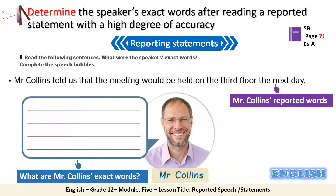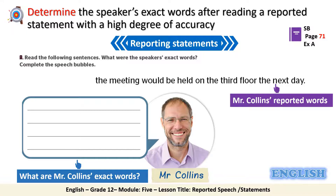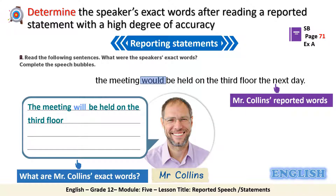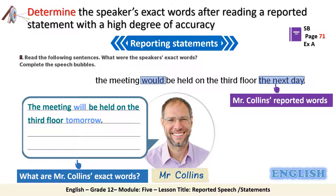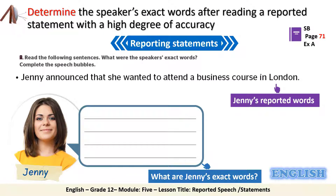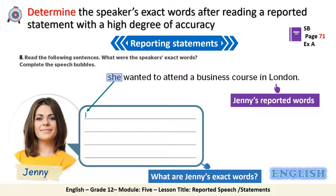Let's have a look at the answers. So of course we cross out 'Mr. Collins told us that.' Then we write 'The meeting will' instead of 'would be held on the third floor' with no change. Then 'tomorrow' takes the place of 'the next day.' Now Jenny — of course we leave out 'Jenny announced that,' then we start with 'I' instead of 'she.'